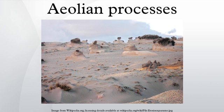Some dust storms are intercontinental, a few may circle the globe, and occasionally they may engulf entire planets. When the Mariner 9 spacecraft entered its orbit around Mars in 1971, a dust storm lasting one month covered the entire planet, thus delaying the task of photo-mapping the planet's surface. Most of the dust carried by dust storms is in the form of silt-sized particles.